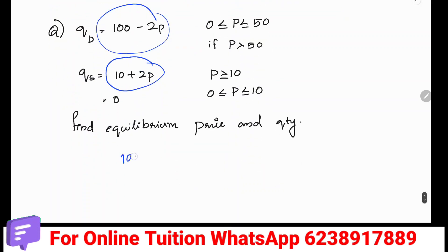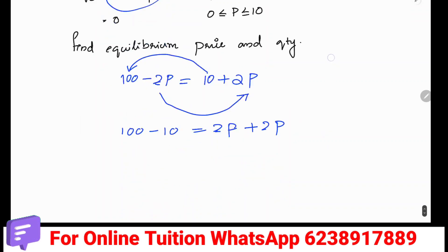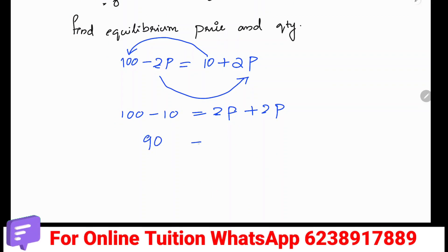Setting QD equal to QS: 100 minus 2P equals 10 plus 2P. We move terms: 100 minus 10 equals 2P plus 2P, giving 90 equals 4P. Dividing 90 by 4 gives us the equilibrium price of 22.5.